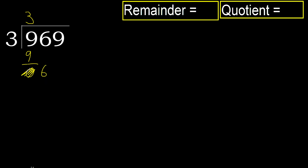Eliminate, bring down 6. 3 multiplied by 3 is 9 — it is greater. 6 is not greater. Subtract. Next.